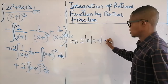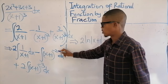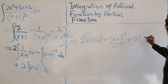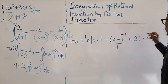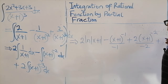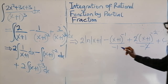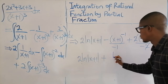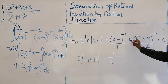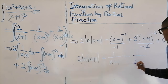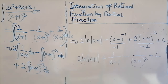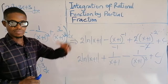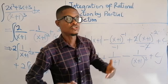Integrating each term: the integral of 1/(x+1) gives 2 ln|x+1|. The integral of (x+1)^(−2) gives minus (x+1)^(−1) over minus 1, i.e., plus 1/(x+1). The integral of (x+1)^(−3) gives plus 2 times (x+1)^(−2) over minus 2, i.e., minus 1/(x+1)². After simplification, the final answer is: 2 ln|x+1| plus 1/(x+1) minus 1/(x+1)² plus C.